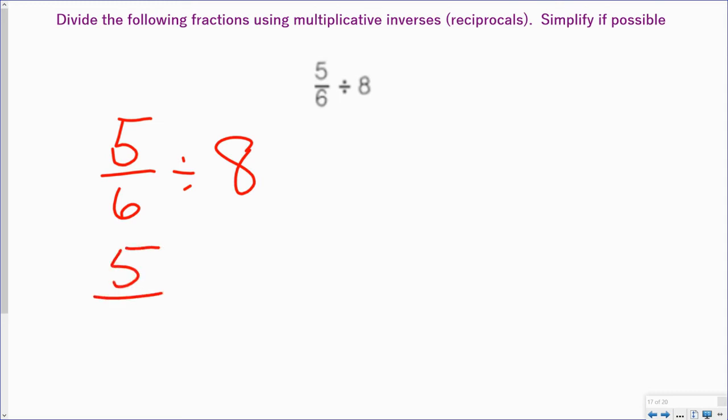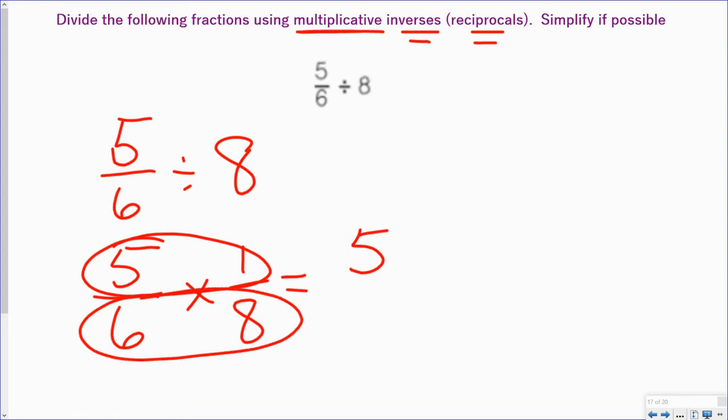Again, first fraction stays as it is. And multiplicative means this is multiplication. And inverse or reciprocals means that I'm changing this 8 to 1 over 8. 5 multiplied by 1 is 5. 6 multiplied by 8 is 48. I can't simplify because I don't have a number that will go into both 5 and 48 evenly. And so then my answer is 5 forty-eighths.